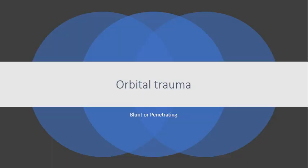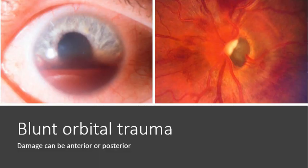We're going to move on now to orbital trauma. Orbital trauma can be either blunt or penetrating. So let's start by looking at blunt orbital trauma.